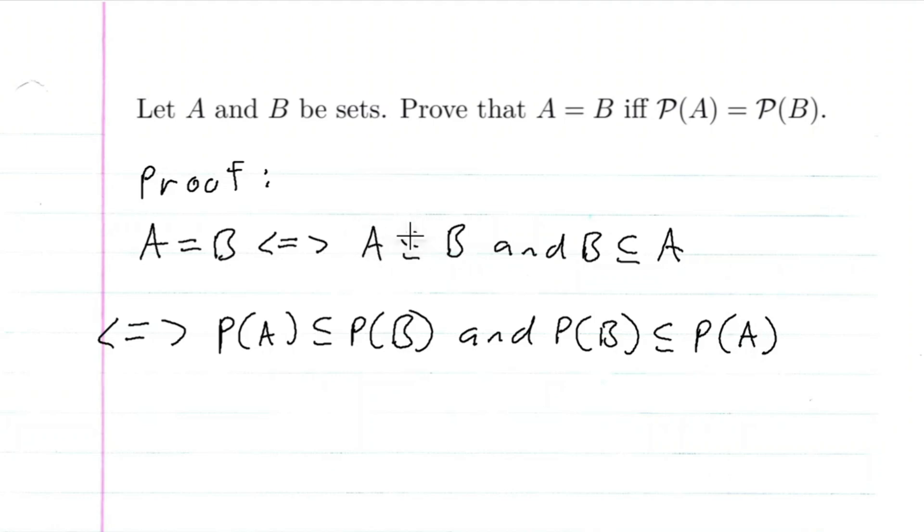Because if we have A as a subset of B, then the power set of A is a subset of the power set of B. And if we have B as a subset of A, the power set of B is a subset of the power set of A. And then, of course, if we have these two, this means that the power set of A is equal to the power set of B.